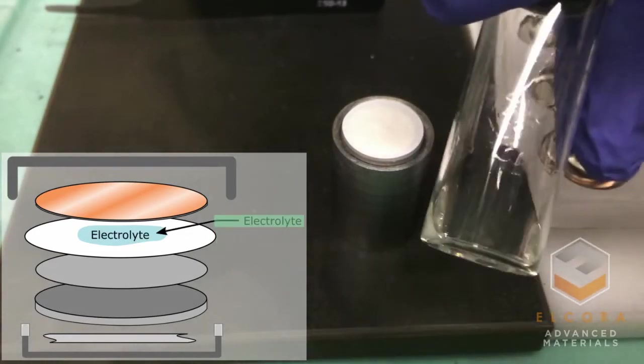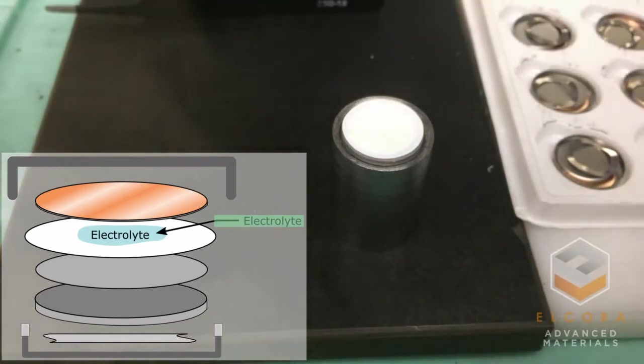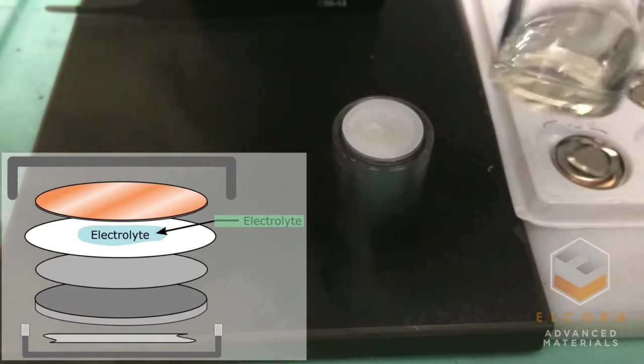The separator is now wetted with a liquid electrolyte. The electrolyte will also wet the graphite anode and allow lithium ions to move easily between the electrodes.